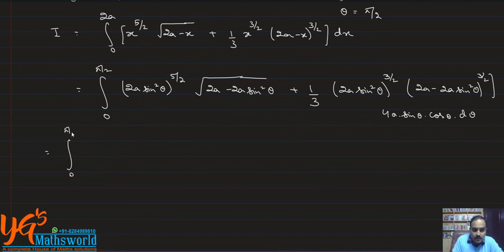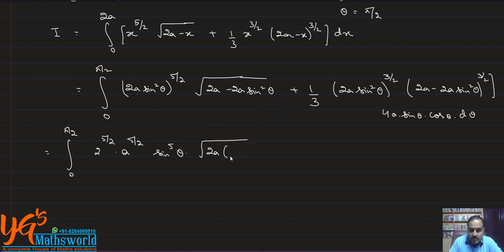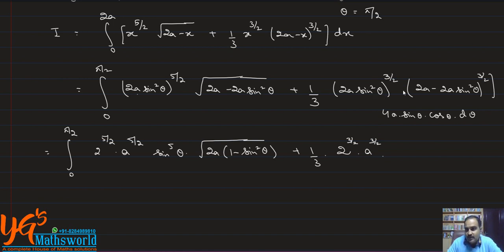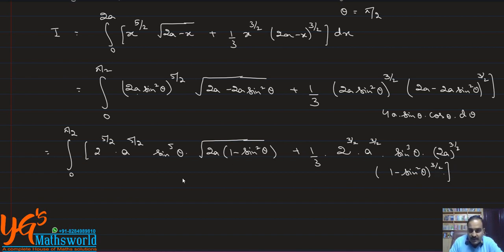From 0 to π/2: 2^(5/2) · a^(5/2) · sin⁵θ · √(2a(1 − sin²θ)) + (1/3) · 2^(3/2) · a^(3/2) · sin³θ · (2a)^(3/2) · (1 − sin²θ)^(3/2). Taking 2a common from the square root gives (2a)^(1/2) · cosθ, and (1 − sin²θ)^(3/2) = cos³θ.